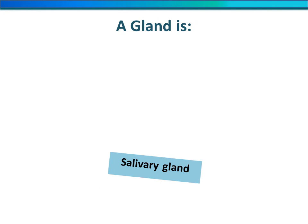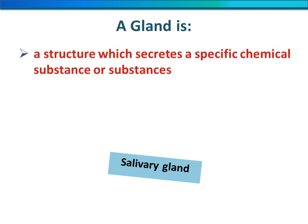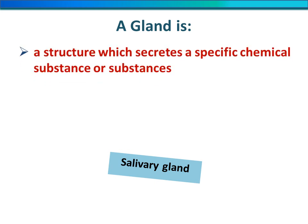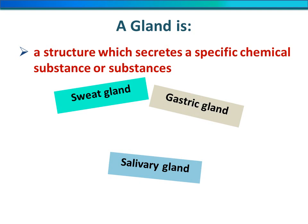Before we talk about hormones, we must know what is meant by a gland. A gland is a structure that secretes a specific chemical substance or substances. We have a lot of glands in our body: sweat glands, salivary glands, gastric glands, and thyroid gland.